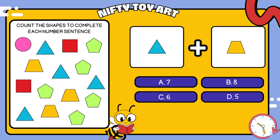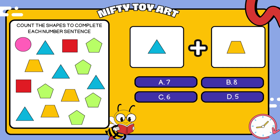I have a triangle plus trapezoid. How many all together? That's right, seven.